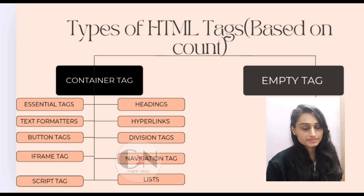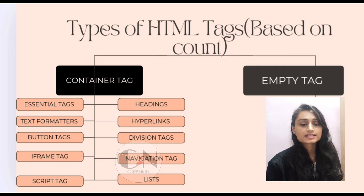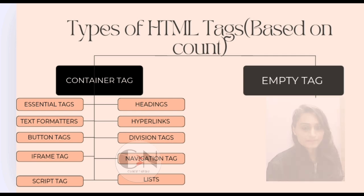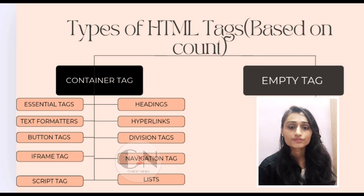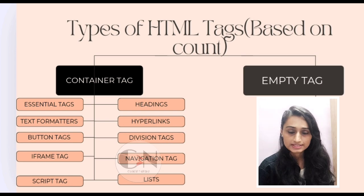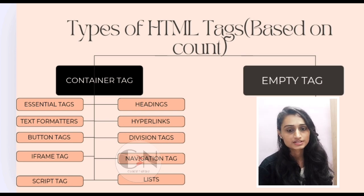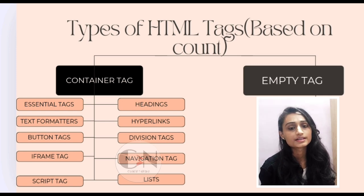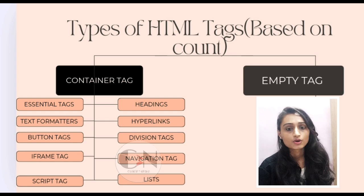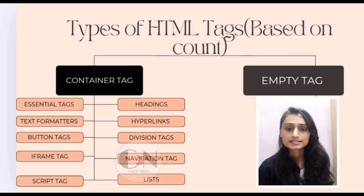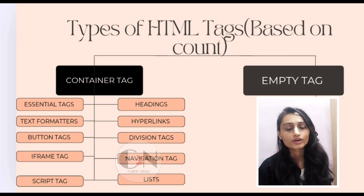Container tags are those elements which consist of other elements — they group and contain other elements. A container tag generally consists of three parts: number one, the opening tag; number two, the content which is displayed on the web browser; and number three, the closing tag. The content may also include other HTML tags. The opening and closing tag always appear in a pair and are also called start and end tag, or on and off tag.